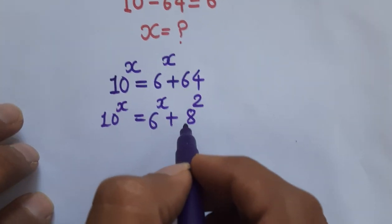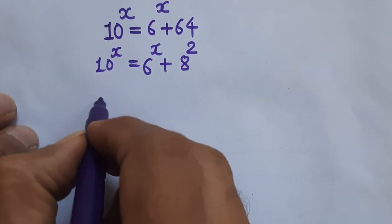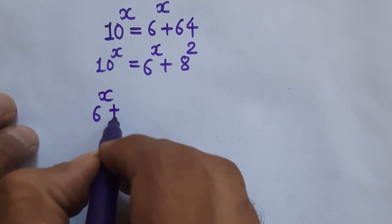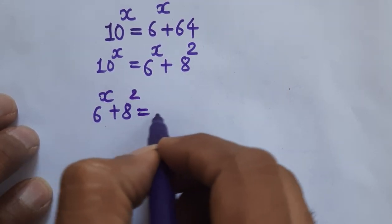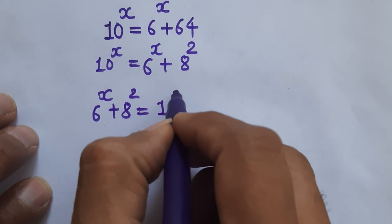So equation becomes like this. So we will write it in this form now. x square is equal to 10 power x.